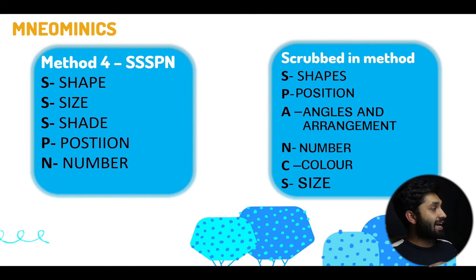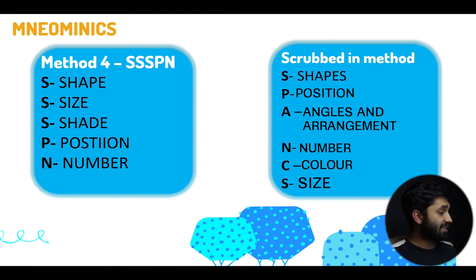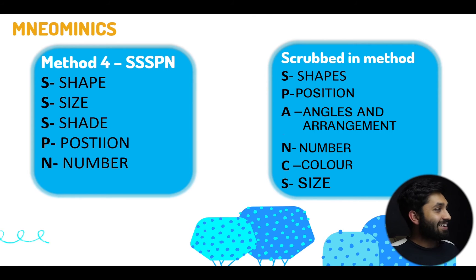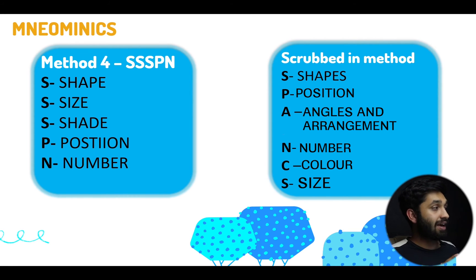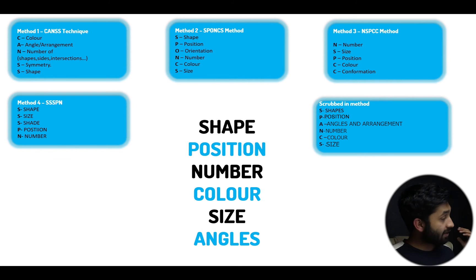Method number four is SSSPN, also called SPIN: S stands for shape, S for size, S for shade, P for position, and N for number. The method I used quite a lot was SPANKS: S for shapes, P for position, A for angles and arrangement, N for number, C for color, and S for size.